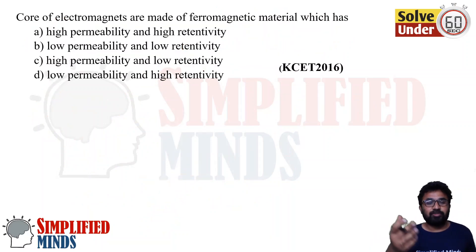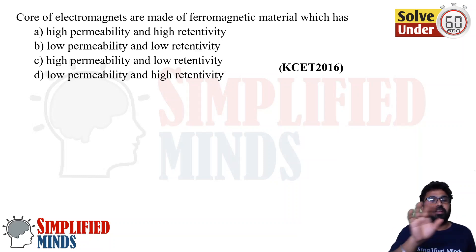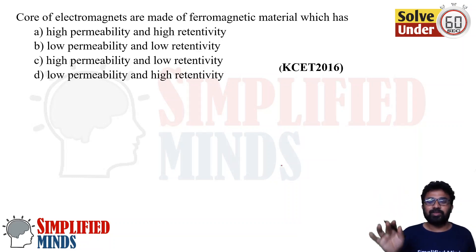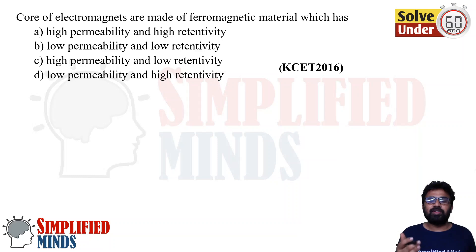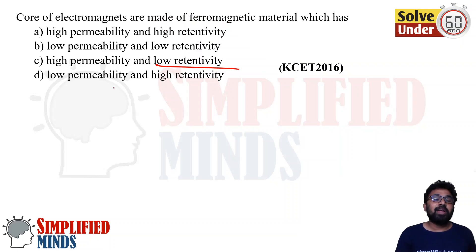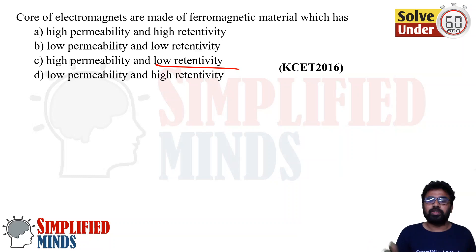Core of electromagnets are made up of — as I was explaining about electromagnets in the previous video. Think about a school bell: when you switch it off, you want it to stop immediately. That means we want low retentivity so the magnet loses magnetism quickly. Also, the core should allow magnetic fields to pass through easily, so it should have very high permeability.